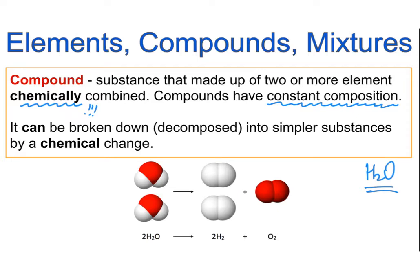Compounds can be broken down into elements or simpler substances by a chemical change. For example, a molecule of water is made out of two elements, hydrogen and oxygen. If we break the bonds between oxygen and hydrogen, those atoms can be rearranged back into molecules of hydrogen and oxygen. This is a chemical process — atoms are rearranged into new substances, and our compound H2O is decomposed into its original elements, hydrogen and oxygen.